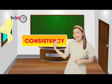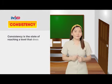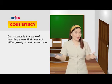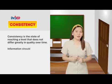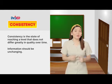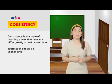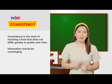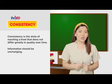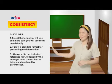Fourth is consistency. Consistency refers to the state of reaching a level that does not differ greatly in quality over time. In other words, information should be unchanging for it to be considered useful. This means there is similarity between perceived information such as the format, use of terms, acronyms, and abbreviations. Consistency provides comprehension, making it easier for readers to understand where to find and how to interpret difficult information. To achieve consistency of information, we must follow these guidelines.